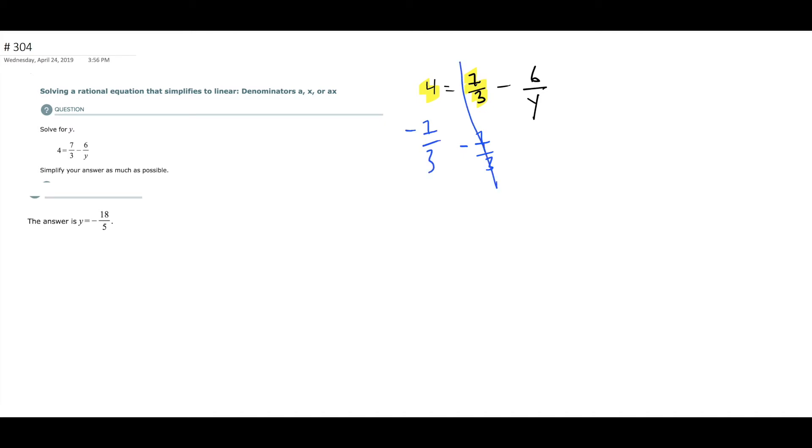All right, so on the left, you're going to get 4 over 1 minus 7 thirds. Common denominator them up. All right, you're going to get 12 over 3 minus 7 over 3, which is 5 over 3. All right, so all of this right here becomes 5 over 3 equals negative 6 over Y.